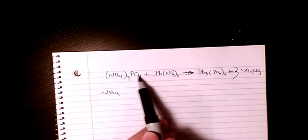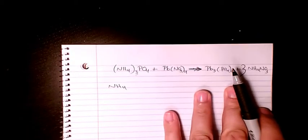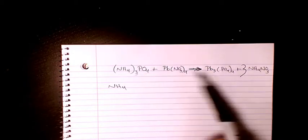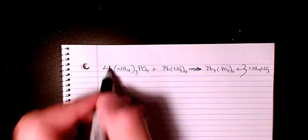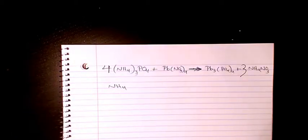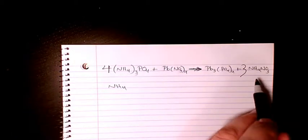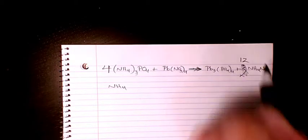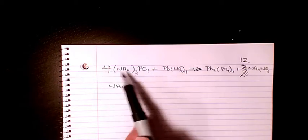What about PO4? PO4, we have one here and we have four here. So I need to put four here. So that's gonna change them to 12. Now ammonium, four times three is 12. This one has to be 12.